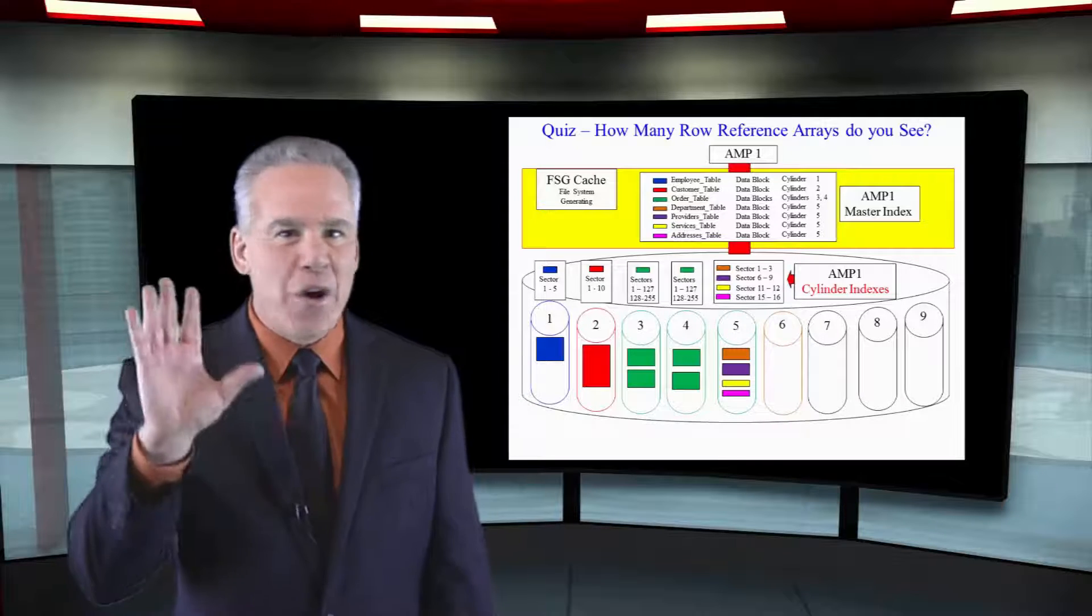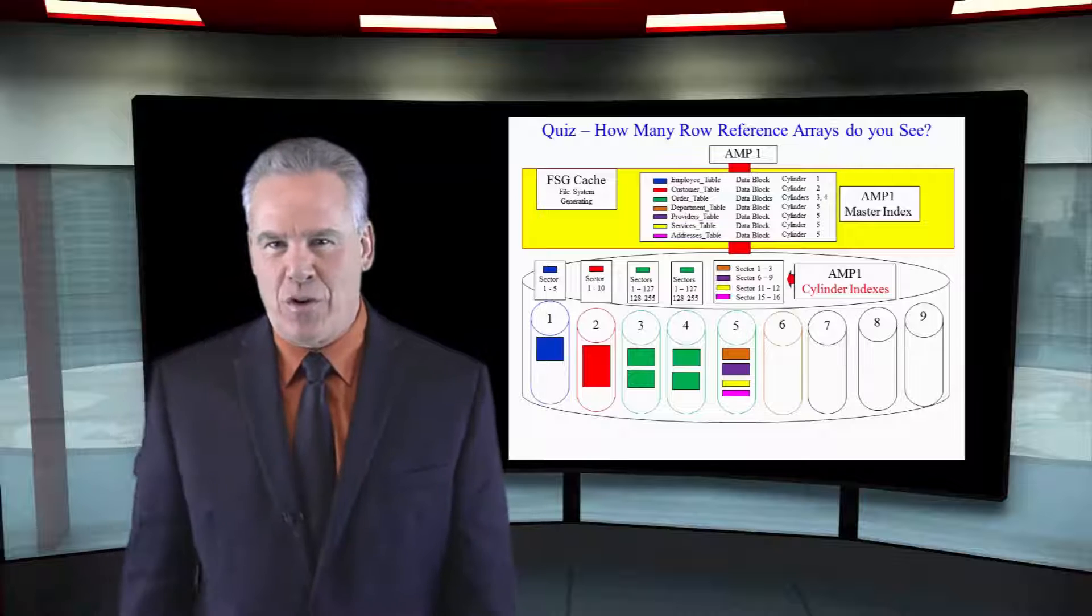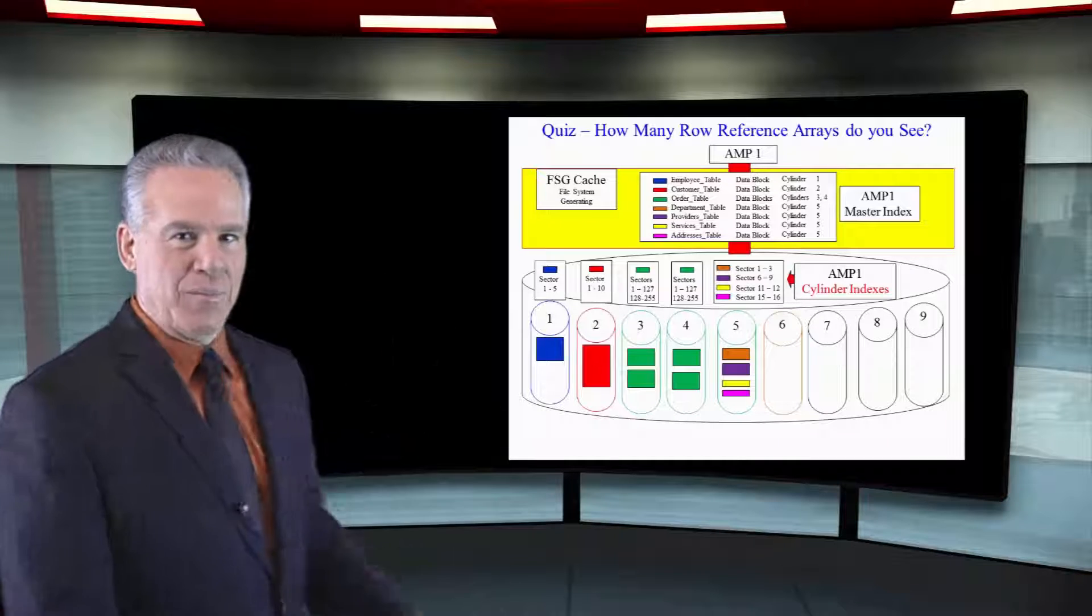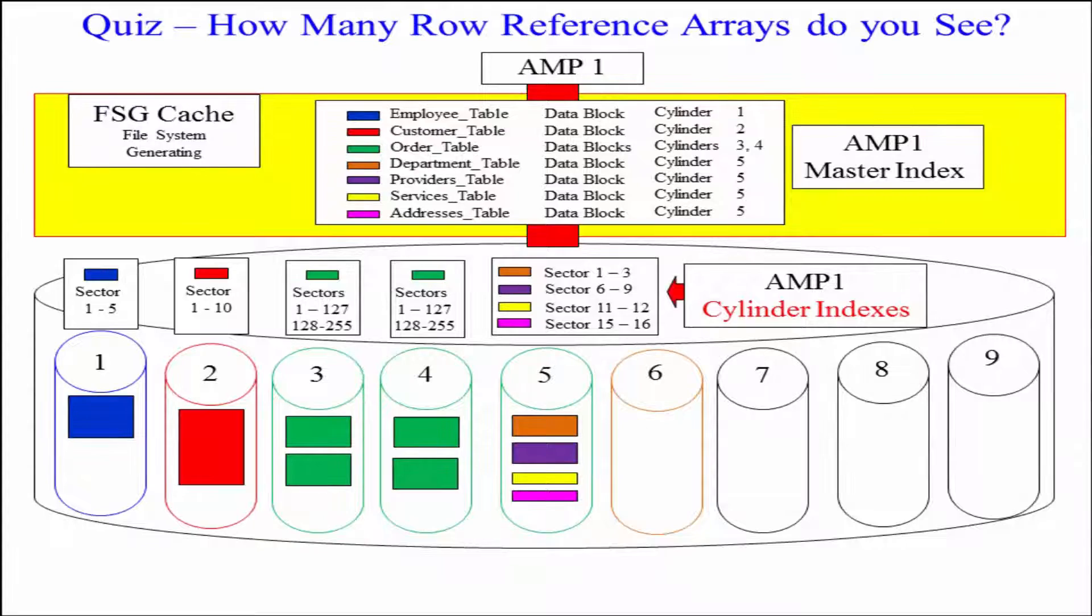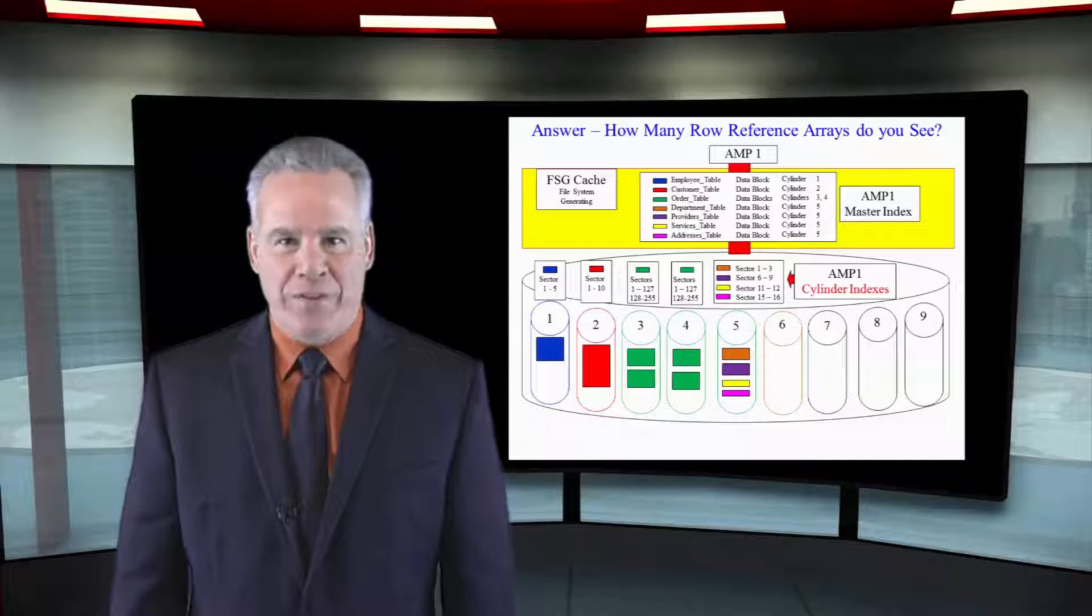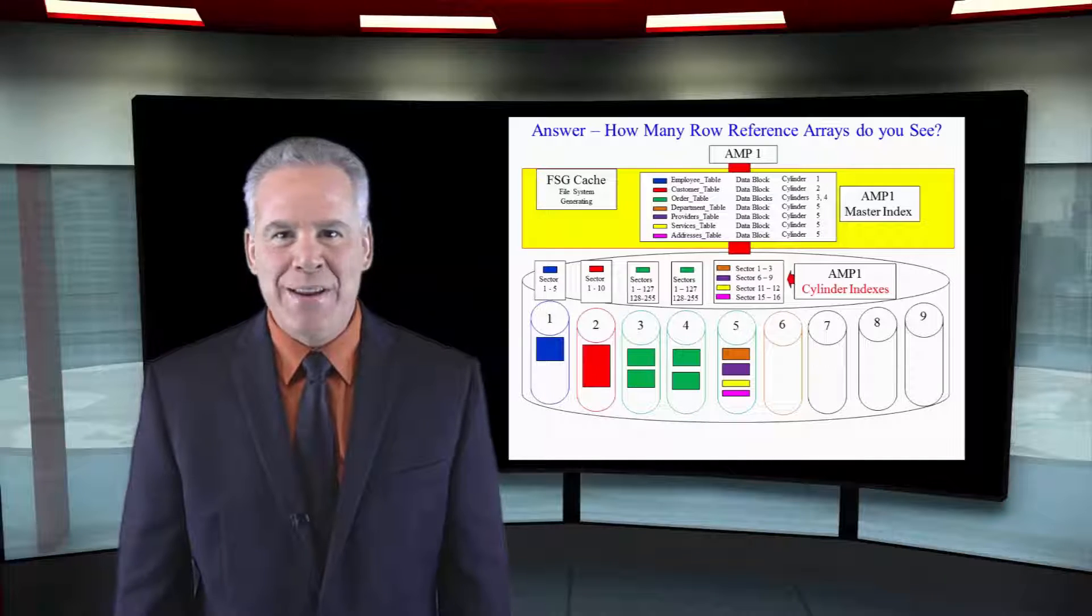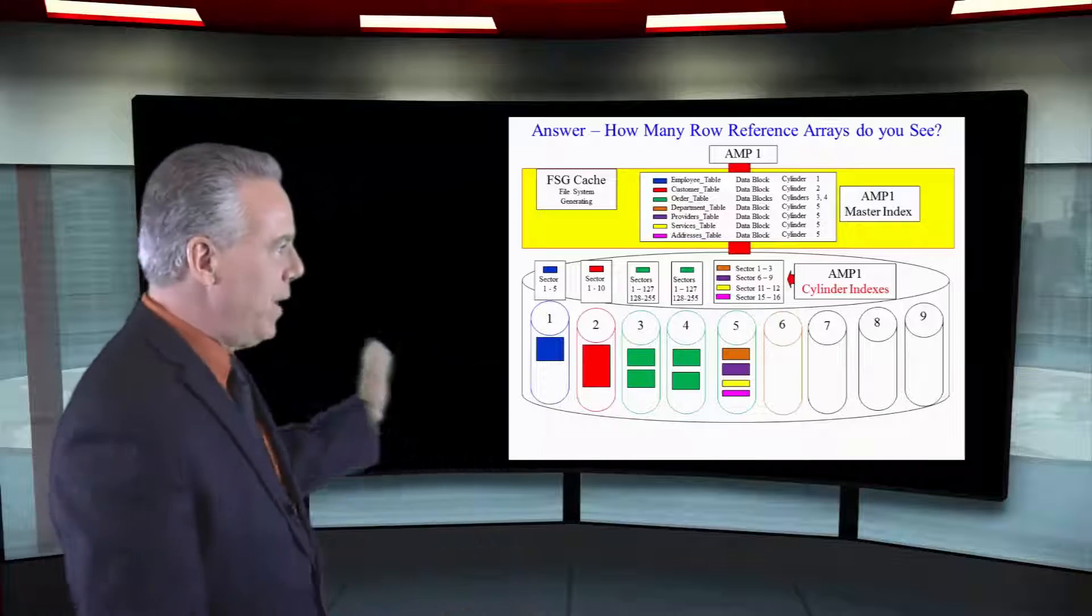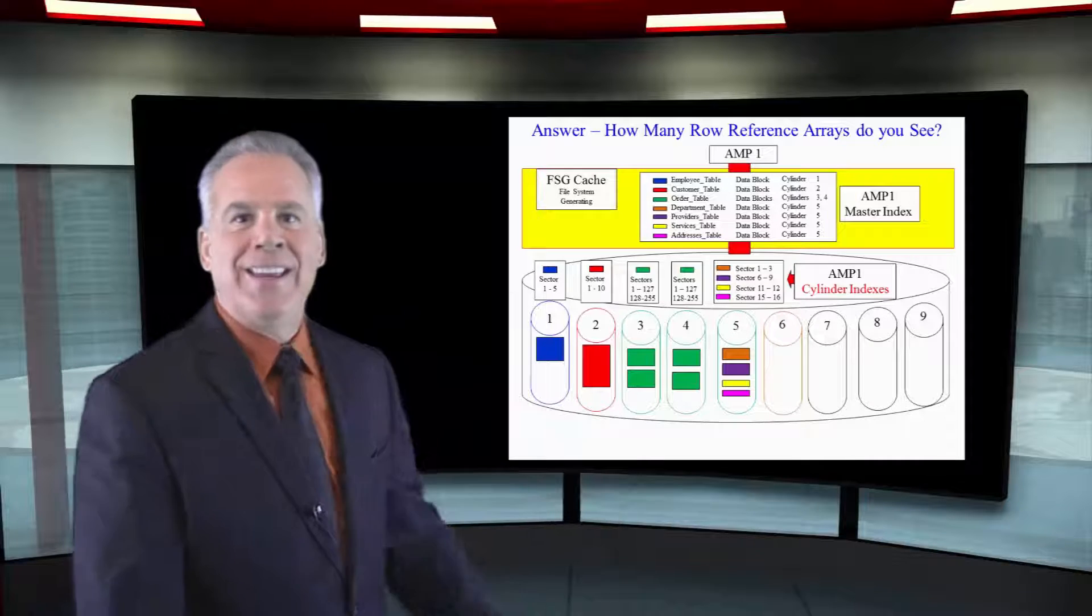I'm going to go psycho abstract on you. I'm going to ask a very difficult question. How many row reference arrays would you see in this diagram for the employee table? We can see from the master index that in cylinder number one, we've got our employee table. There's only one block in that table. It has not split yet. One block. So there would only be one row reference array in that picture.